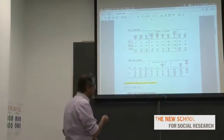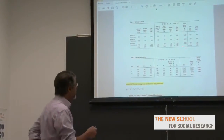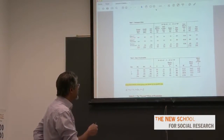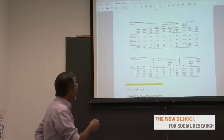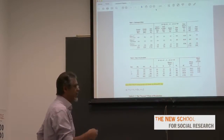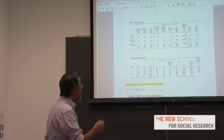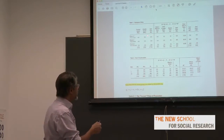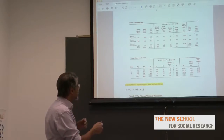Here's an example taken from Paul Sweezy, the famous illustration of the transformation problem. These are three industries: means of production, means of subsistence, and capitalist consumption. This is the constant capital, which is the labor value of the raw materials. Variable capital is the labor value of the wages. The cost price is the sum of the two. In the first sector, the labor value of materials and wages is 630.